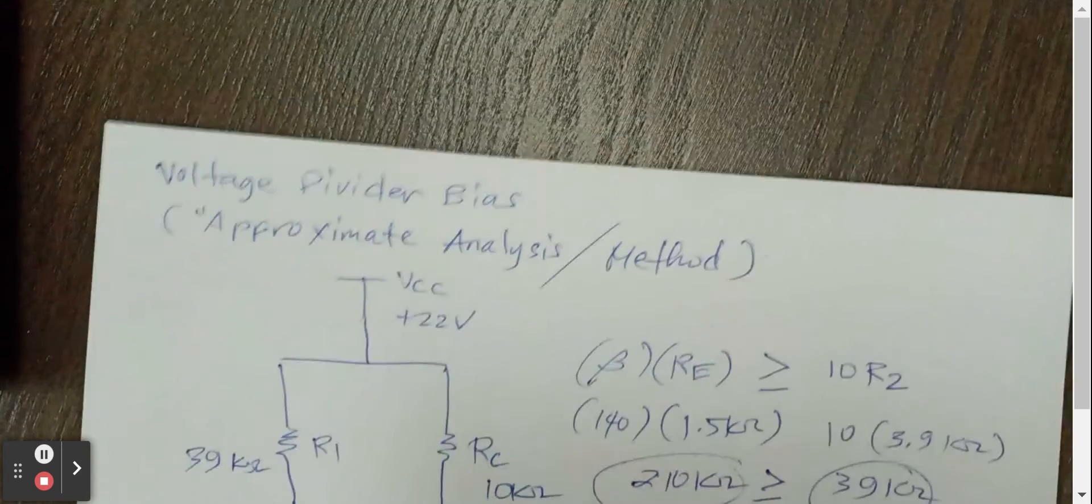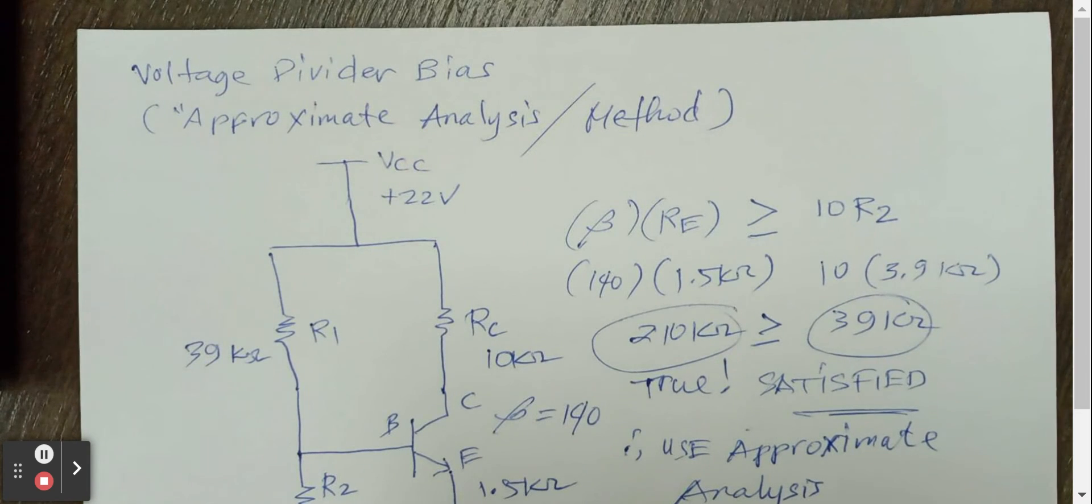So that's it for the voltage divider bias. So again, for the voltage divider bias, we have two methods or two ways to analyze the circuit. The first one was using the exact method. If you haven't watched that video, you can do so by clicking on the video for exact analysis. And this time, what we had is the approximate analysis.